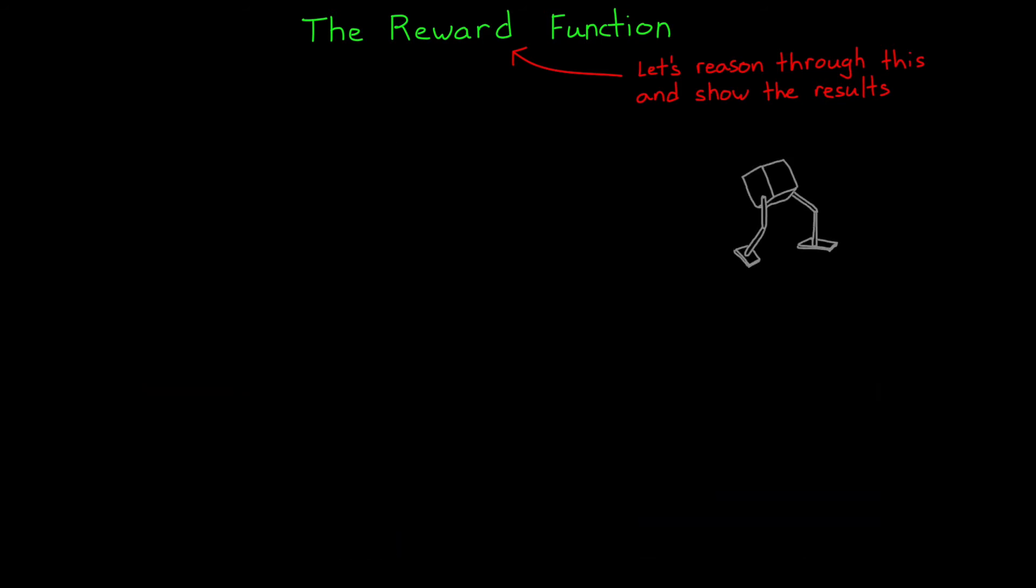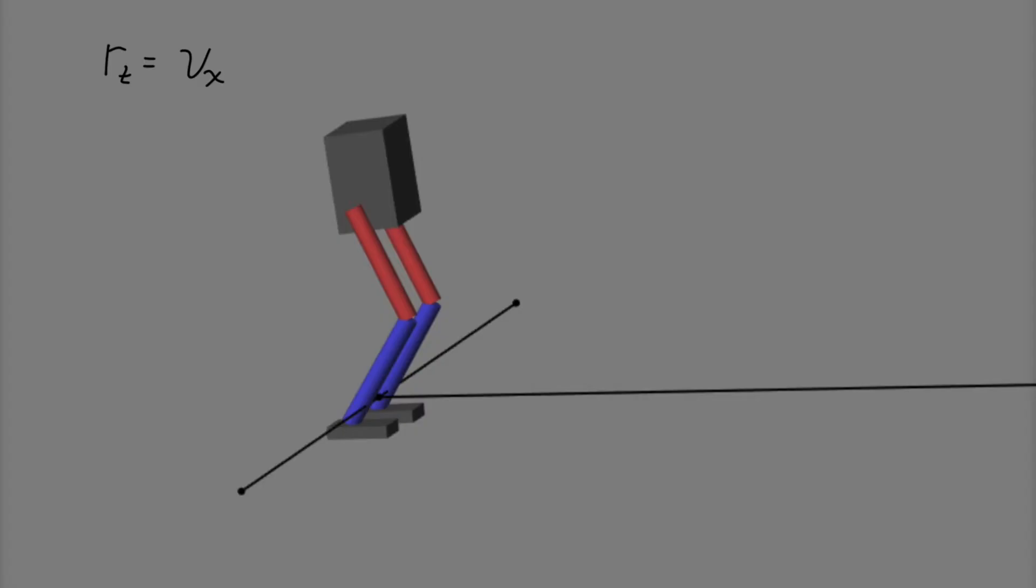Where to start? We obviously want the body of the robot to move forward otherwise it's just going to stand there. But instead of distance we can reward it for its forward velocity. That way there's a desire for the robot to walk faster rather than slower. In training with this reward we can see that the robot dives forward to get that quick burst of speed at the beginning and then it falls over and doesn't really make it anywhere.